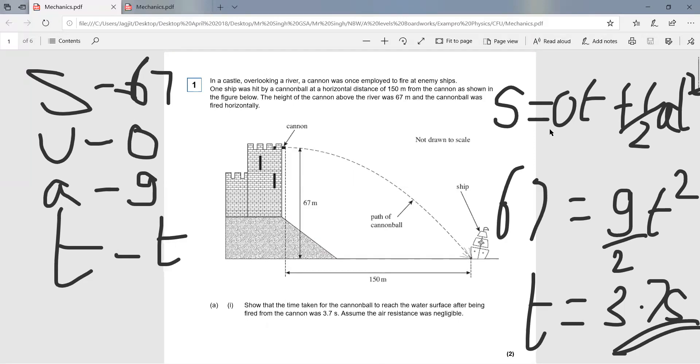Because at the start there is no vertical velocity, initial velocity u is zero. The displacement is 67. Just rearrange the formula to make t the subject and you'll get the answer, which is about 3.7 seconds.